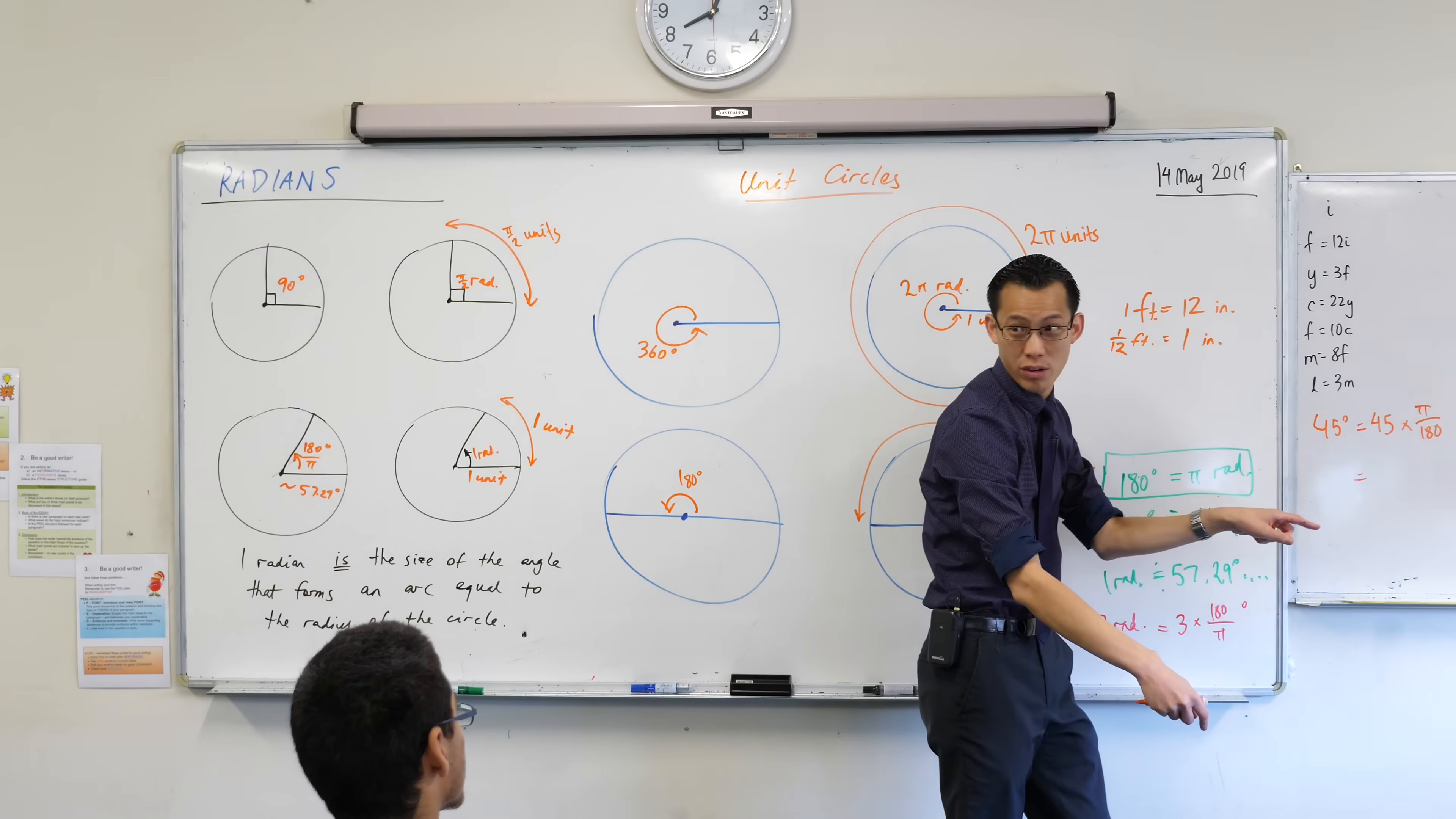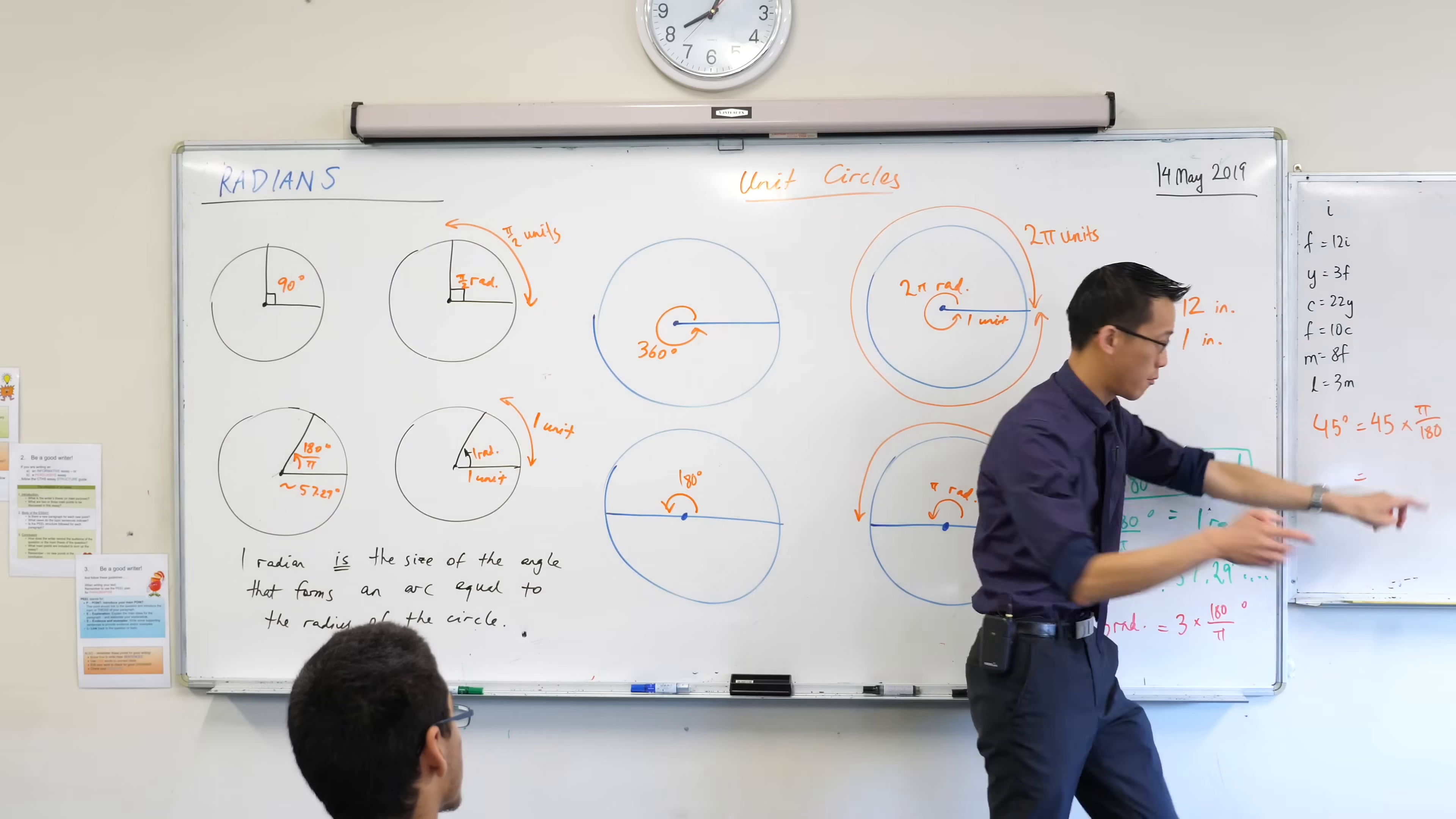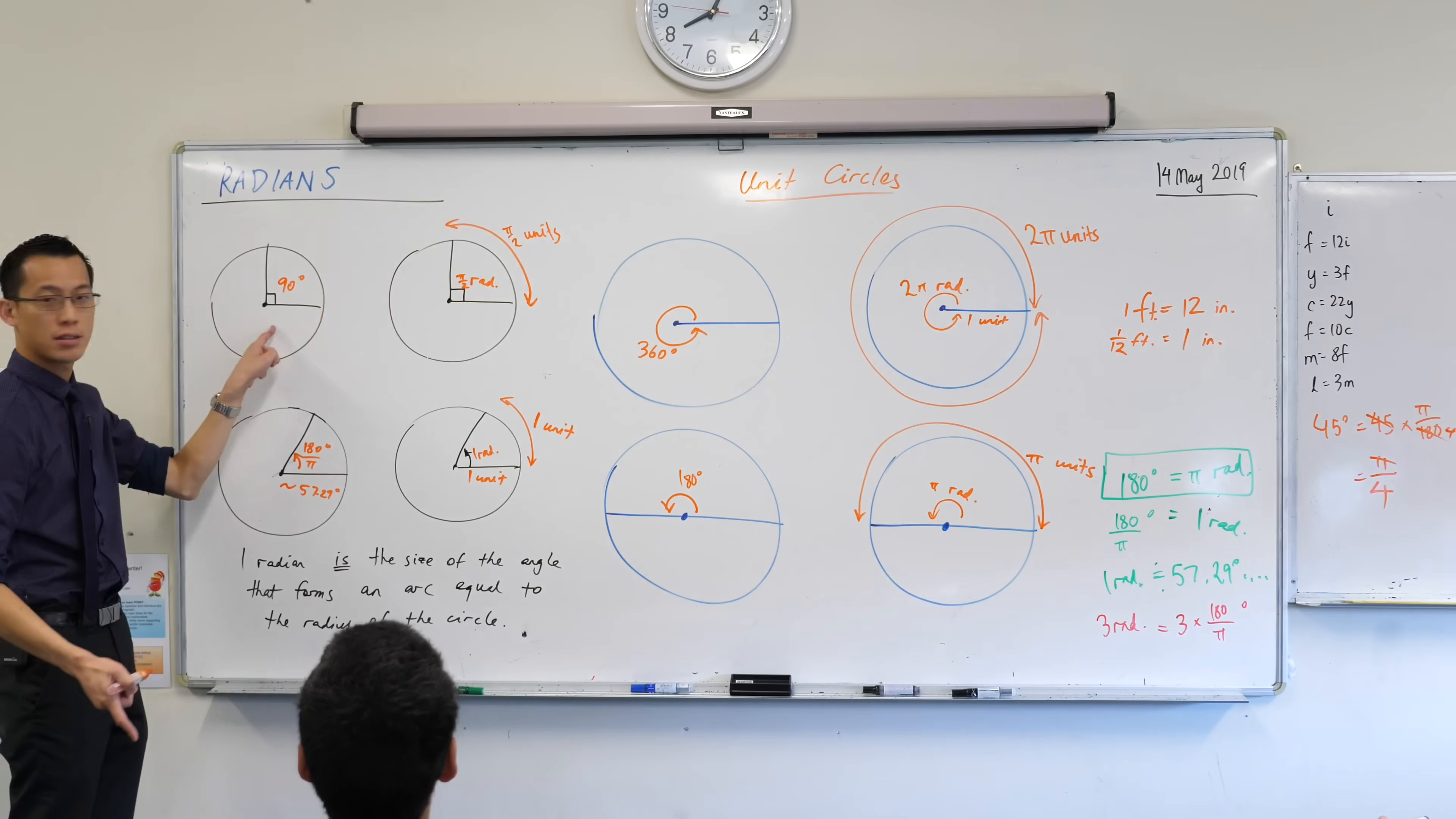45, 180. Can we simplify this? Can we write an equivalent fraction that's nicer and neater? How many 45s can you fit into 180? You'd be four of them, right? So if I go cancel, cancel, I get π on four radians, which should make sense, because it's half of this. Do you see that?